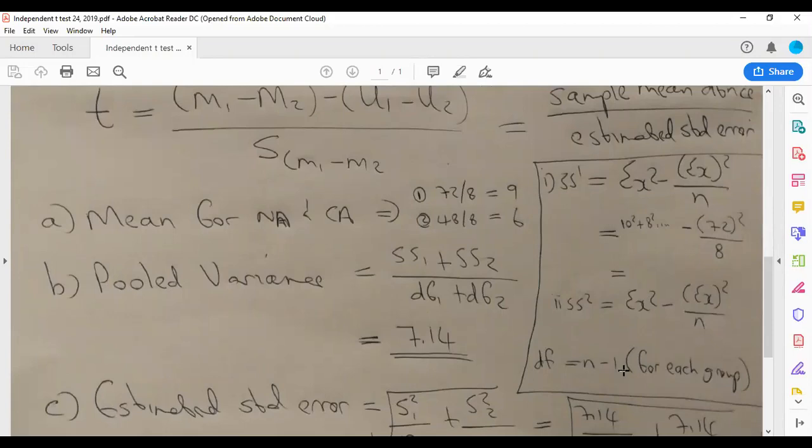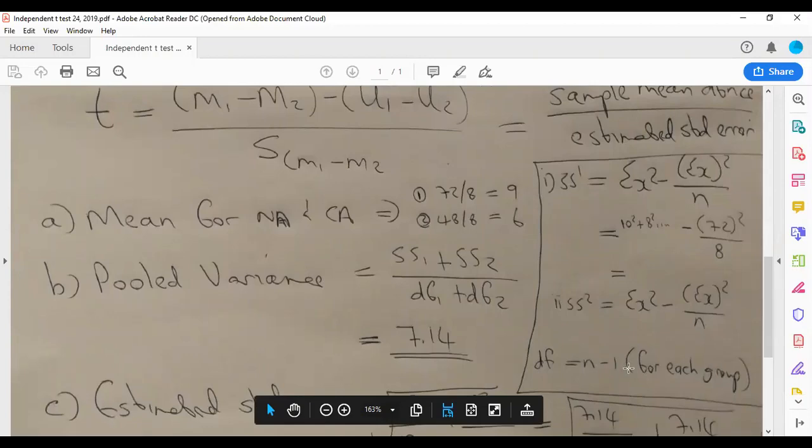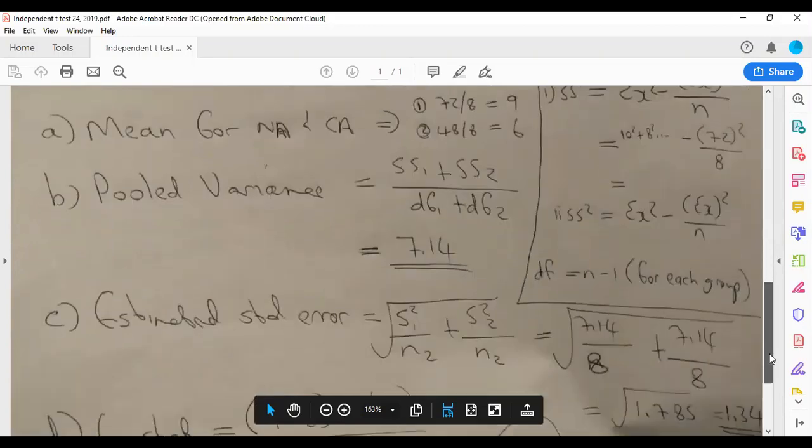So it's how many participants—1, 2, 3, 4, 5, 6, 7, 8—it means 8 minus 1, so it's 7, and then 7. When you divide, the answer is 7.14. So the answer is pooled variance.